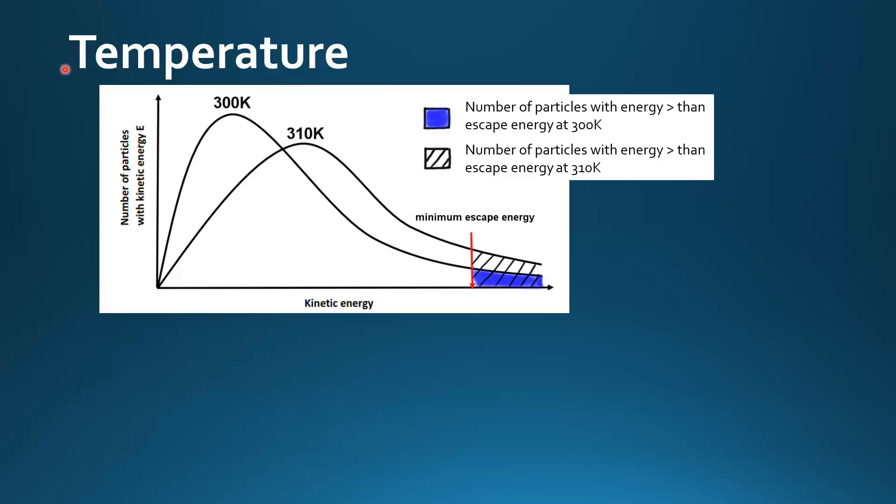First we look at temperature. Here we have a Maxwell-Boltzmann distribution curve for two temperatures, 300K and 310K.